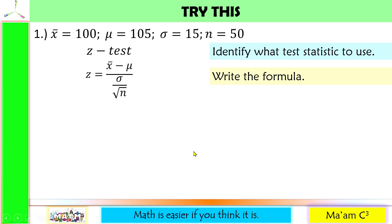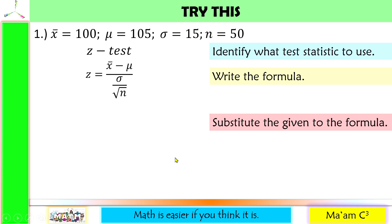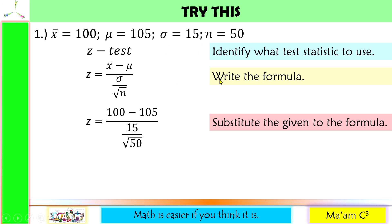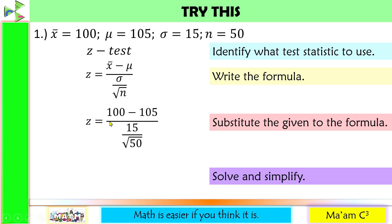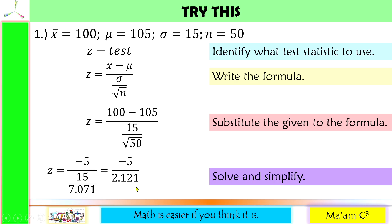Step 2: write the formula. Z is equal to sample mean minus population mean, all over sigma divided by the square root of n. Step 3: substitute the given. X-bar is 100, mu is 105, sigma is 15, and n is 50. Step 4: solve and simplify. 100 minus 105 is negative 5. Square root of 50 is 7.071. 15 divided by 7.071 is 2.121. Negative 5 divided by 2.121 is equal to negative 2.357. This is our computed Z value.